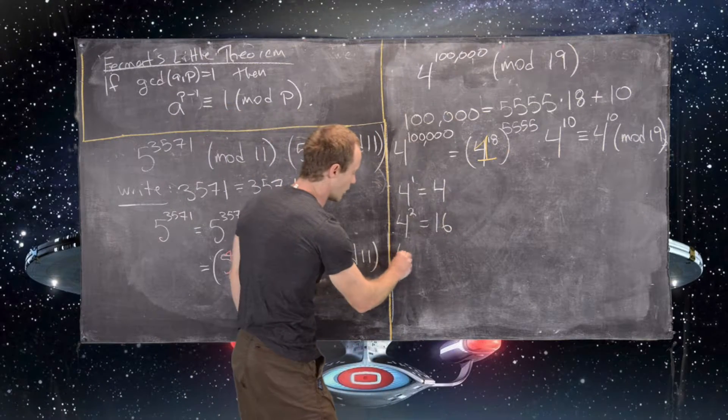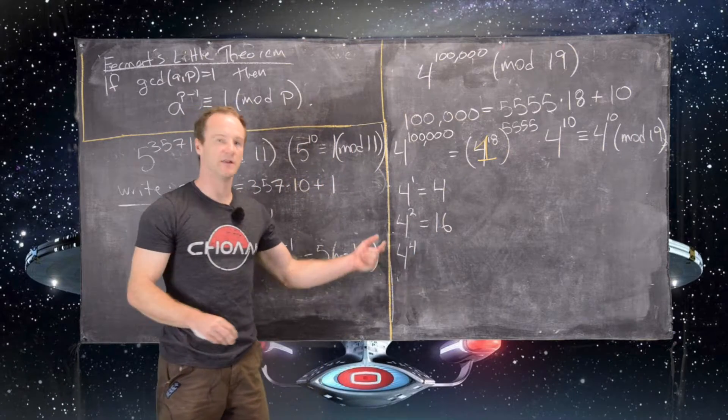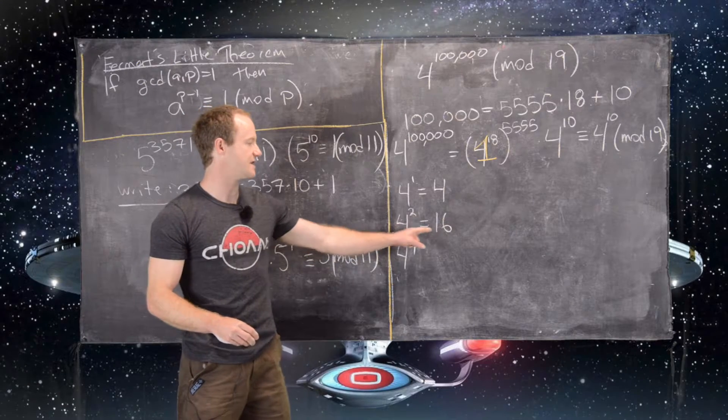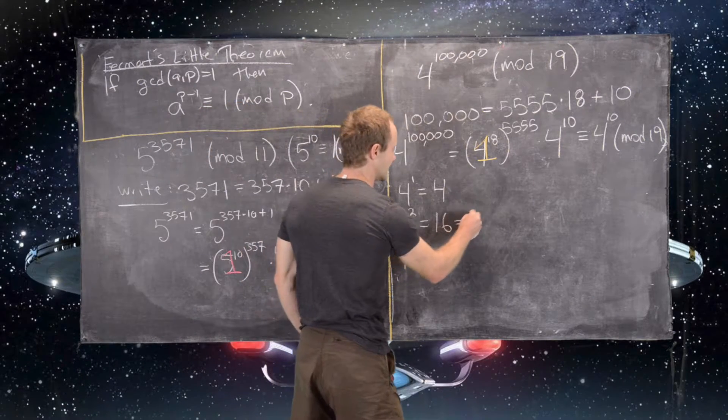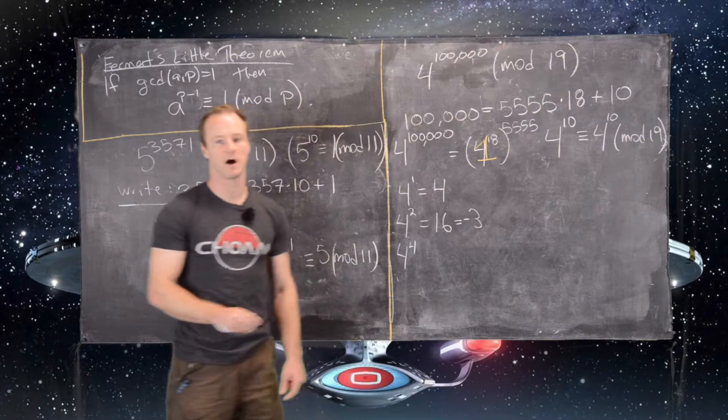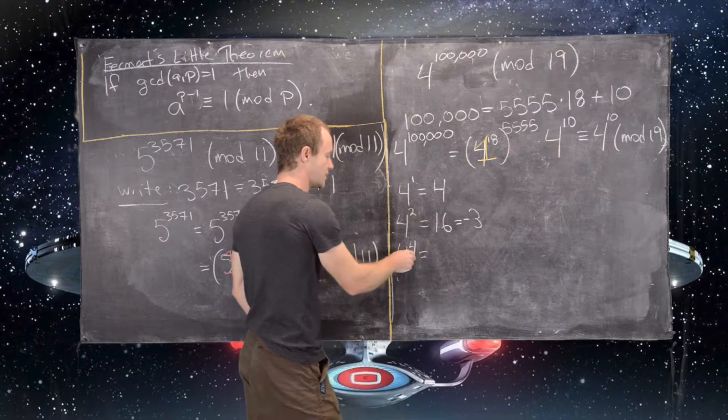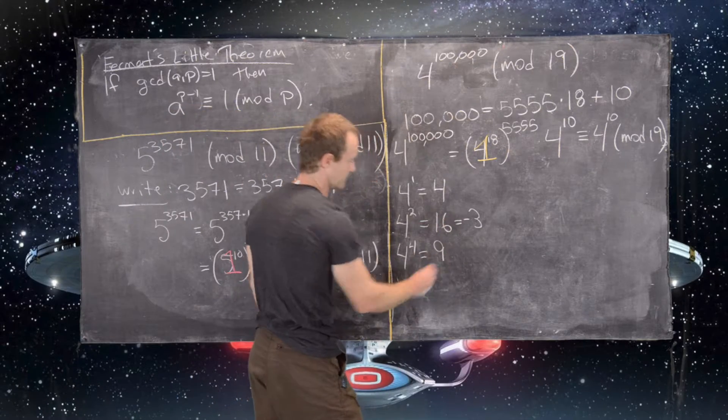And then 4 to the 4th power will be equal to 16 squared. But that's a number that I can't square very quickly in my head. So what I'll instead do is use the fact that 16 is the same thing as negative 3 mod 19, which allows us to say 4 to the 4th power is negative 3 squared or 9 mod 19.